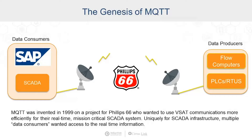MQTT was invented in 1999 on a project for Phillips 66, who wanted to use VSAT communications more effectively in their real-time, mission-critical SCADA system. Uniquely for SCADA systems at that time, they had multiple data consumers that wanted access to the real-time information that was out in the field.